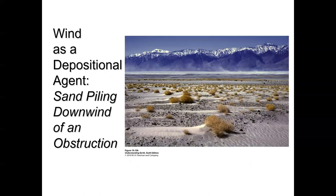Sometimes you can tell the predominant wind direction because sediment piles up on the downwind side where it's protected by obstructions. Here we have piles of sand collecting on the downwind sides of little scrubby brush, which means wind is probably moving right to left in this image predominantly.